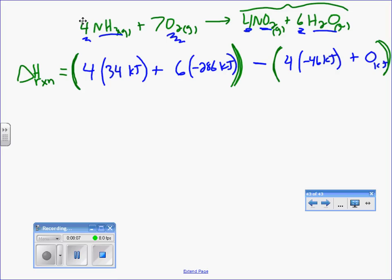And so, what I'm going to do is take 4 times 34. 4 times 34 kilojoules gives me 136 kilojoules plus a negative 6 times 286, that's negative 286 gives me negative 1716 minus 4 times negative 46 which gives me negative 184.